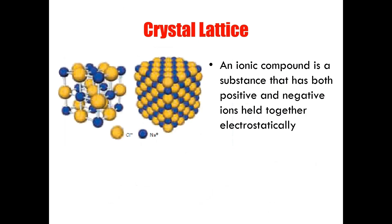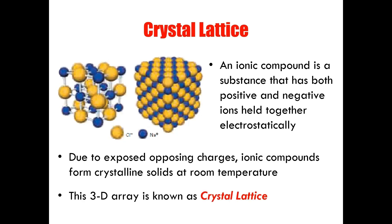When individual ionic compounds cluster together, such as those of sodium chloride, they form a complex structure called a crystal lattice. These are the ionic crystals that we so commonly see in our shakers, or in bags sold at retailers. A crystal lattice is a 3D array of electrostatically attached ions. An ionic compound is a substance that has both positive and negative ions held together by these electrostatic attractions. Due to the exposed charges on these compounds, many of them can connect to one another at room temperature to form these large crystal structures.